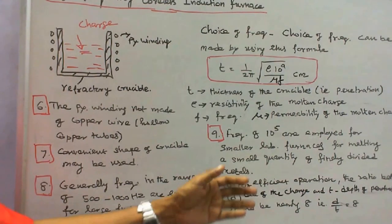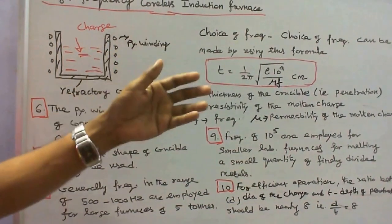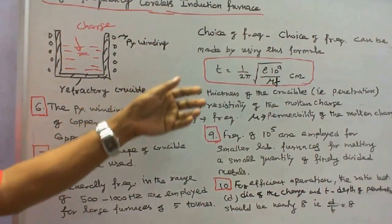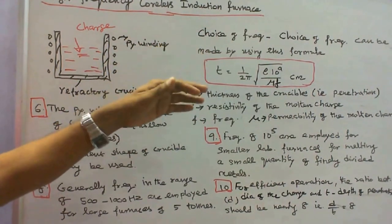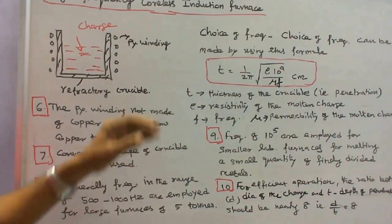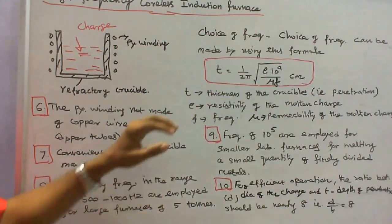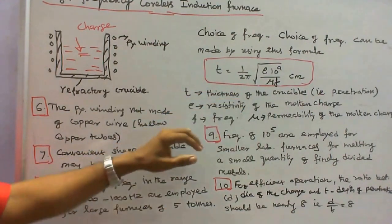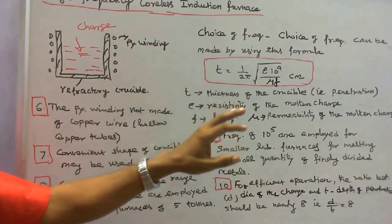That is, D/T = 8. The choice of frequency can be made by using the formula: T = (1 / 2π) × √(ρ × 1049 / μ × F) in centimetres, where T is the thickness of penetration, ρ is the resistivity of the molten charge, F is the supply frequency, and μ is the permeability of the molten charge.